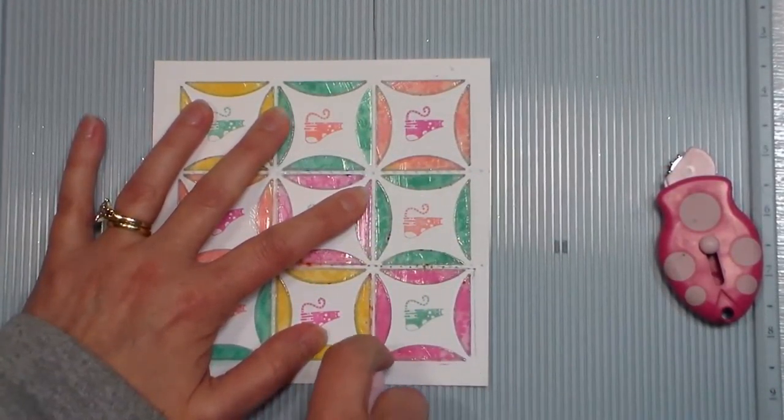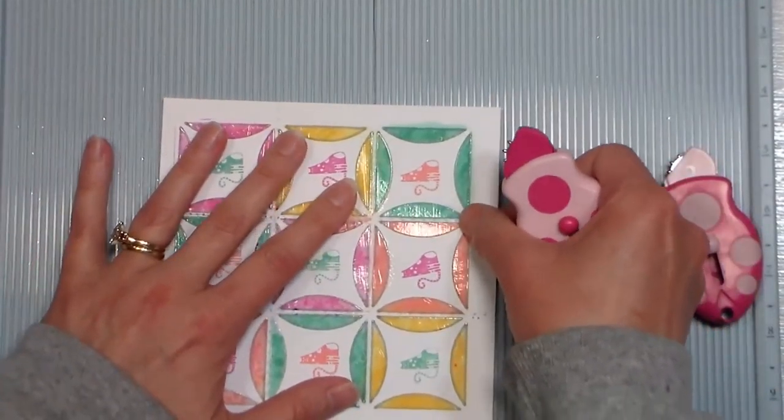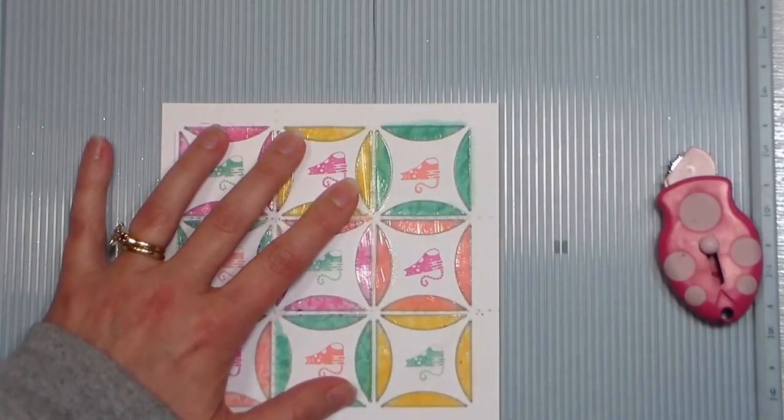To get the look of stitching, I'm using some little piercing tools. These are by EK Success, but you can also find the single piercing tools from ScorePal, and that is the maker of the scoring board that I'm using here.